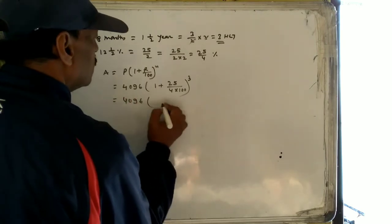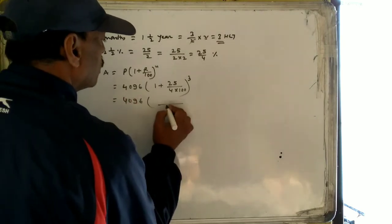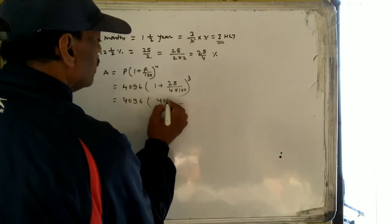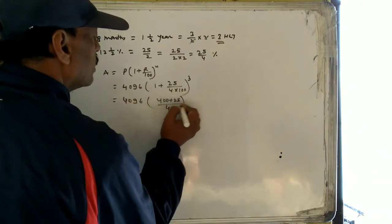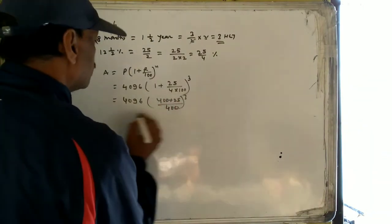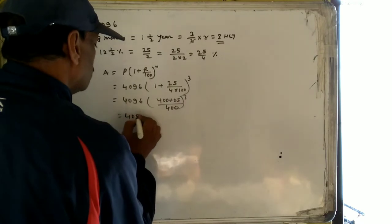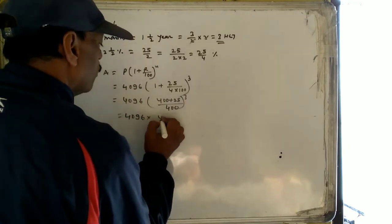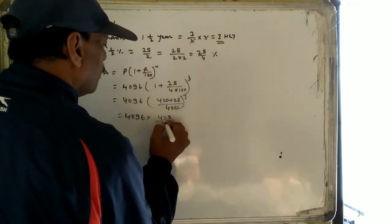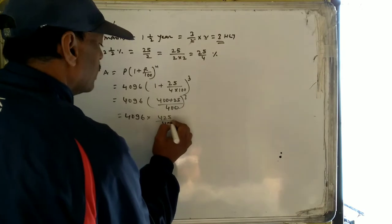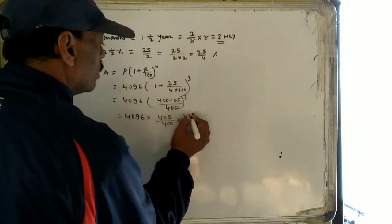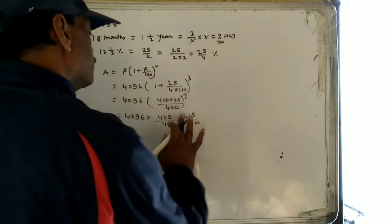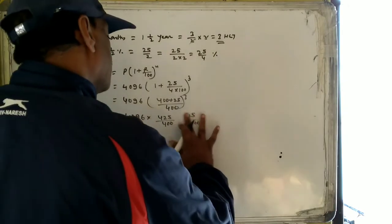So we have 4096 into (1 plus 25 by 4 divided by 100) to the power 3, which gives us 4096 into (400 plus 25) upon 400, to the power 3 — that is 4096 into (425 upon 400) into (425 upon 400) into (425 upon 400).